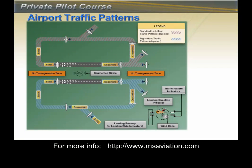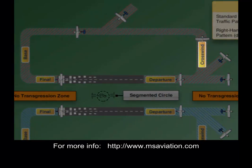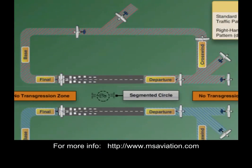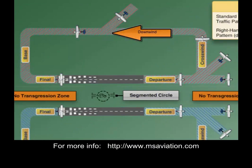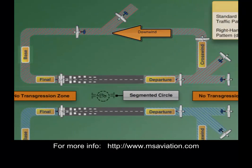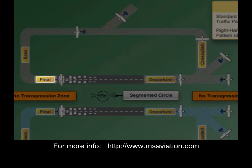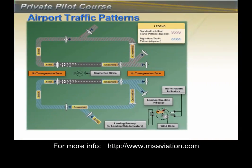Now that we know about airport signs and getting around on the ground, we need to look at how to depart and come into an airport. There are established procedures to depart and enter the traffic pattern. The traffic pattern is a path around an airport involving either right or left turns. Departing the runway after takeoff, before any turns, is the upwind leg. Following the path left is the crosswind leg, then downwind, then a left turn to base leg, and finally the last left turn to final approach.